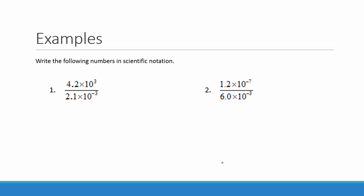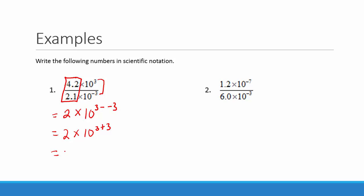Now we will look at some examples of dividing numbers that are in scientific notation. First, we will divide the numbers in front of the powers of 10. 4.2 divided by 2.1 is equal to 2. Then we will subtract our exponents — the top exponent minus the bottom exponent — so we have 3 minus negative 3. So we get 2 times 10 to the 3 plus 3, which is equal to 2 times 10 to the 6th.